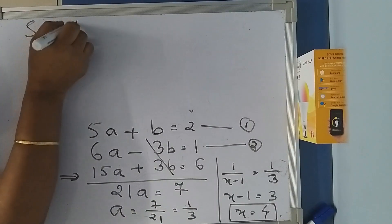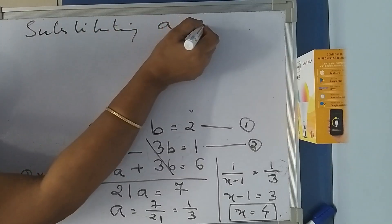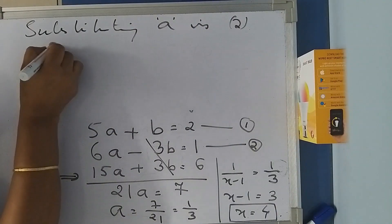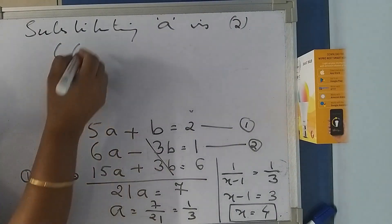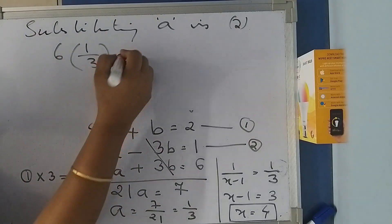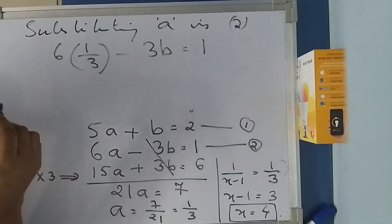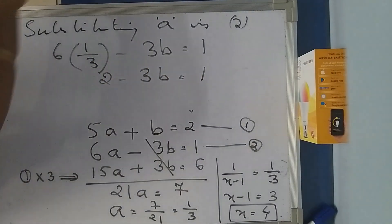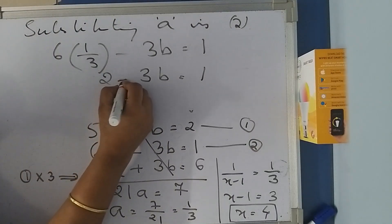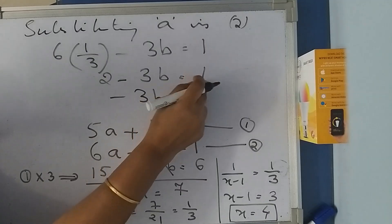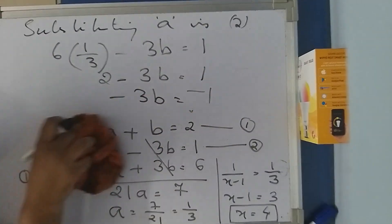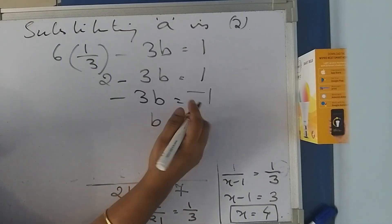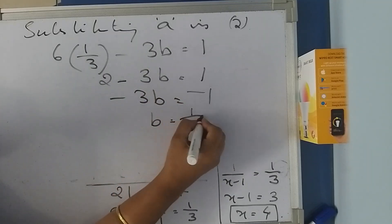Substituting A in equation 2, what do we get? 6A, where A is 1/3. So 6(1/3) - 3B = 1. This is 2. So 2 - 3B = 1. Minus 3B = 1 - 2, which is -1.